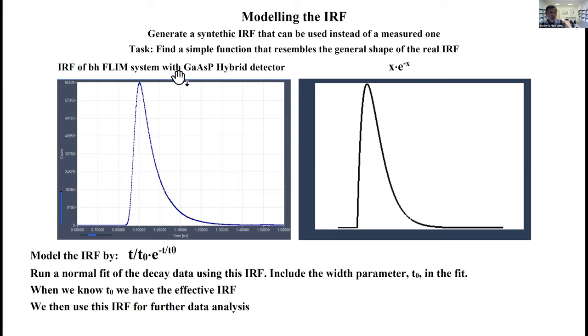Can we do better? Our approach is we look for a mathematical function which has the same general shape as our typical instrument response function. This is an instrument response function and this is a function x times e power minus x, simply a mathematical function. You see it has the same general shape, not exactly but close enough. We have to convert this into a waveform over time. This becomes t divided by t0 times e minus t over t0.